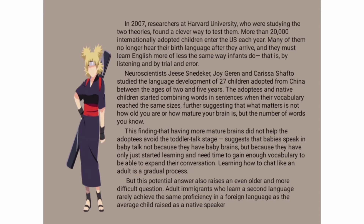Neuroscientists G.S. Nathikar, Joey Cairn, and Curtis Schefftel studied the language development of 27 children adopted from China between the ages of 2 and 5 years. The adopted and native children started combining words in sentences when their vocabulary reached the same sizes, further suggesting that what matters is not how old you are or how mature your brain is, but the number of words you know.